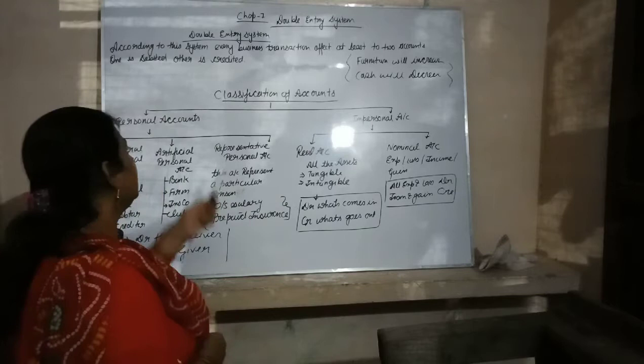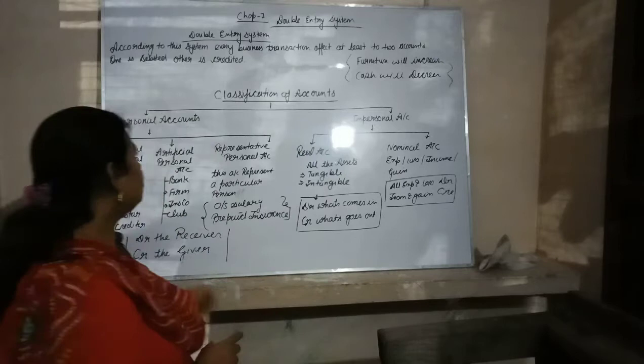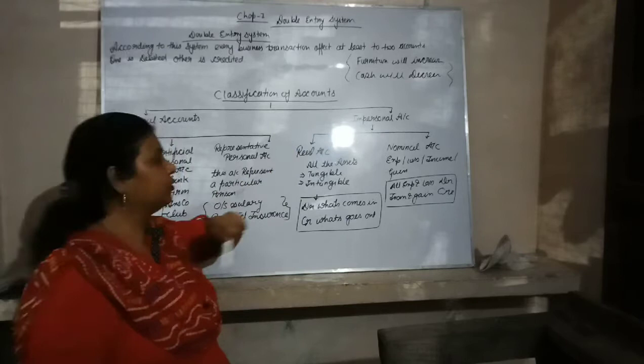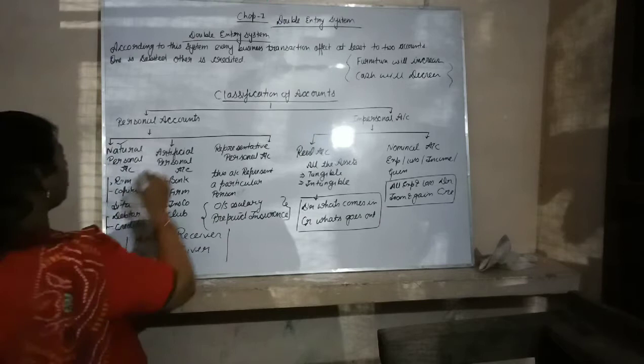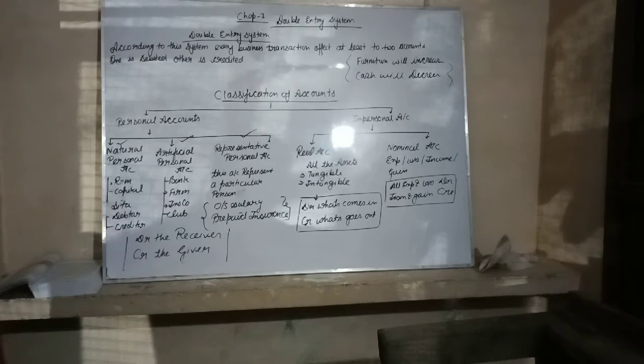The next point is classification of accounts. There are two types of accounts: first is personal account and second is impersonal account. Under personal account, there are three types: natural personal account, artificial personal account, and representative personal account.